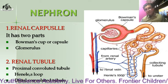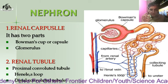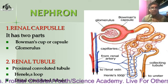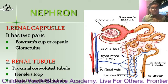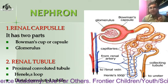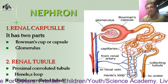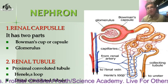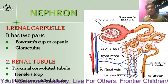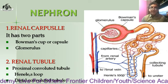Now let's discuss the structure of a single nephron. There are one million nephrons in each kidney. There are two main parts: the renal corpuscle and the renal tubule. The renal corpuscle has two further parts: the Bowman's capsule — this cup-shaped part as shown in the diagram — and the glomerulus, which is a bunch or network of very fine capillaries inside the cup.